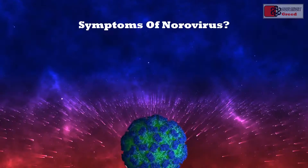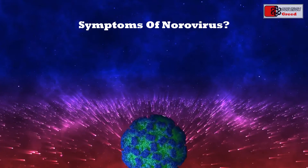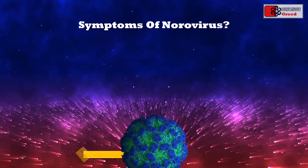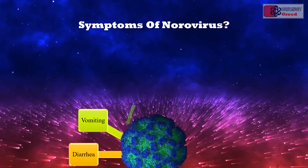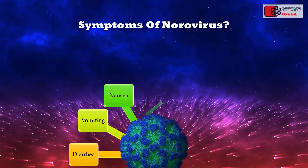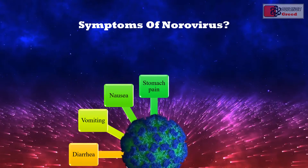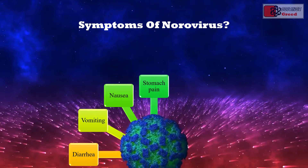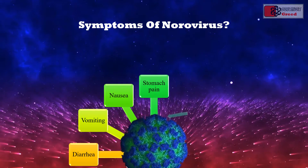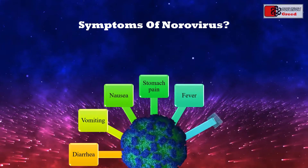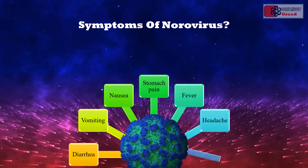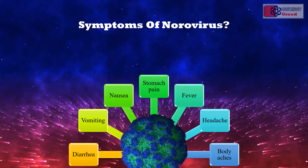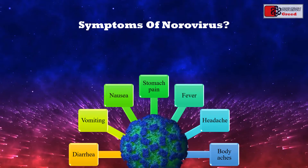What are the symptoms of norovirus? Symptoms include diarrhea, vomiting, nausea, and stomach pain. It can cause inflammation of the stomach or intestines, called acute gastroenteritis. Other symptoms include fever, headache, and body aches. Most people develop symptoms within 12 to 48 hours of contracting norovirus, and they can last up to 1 to 3 days.